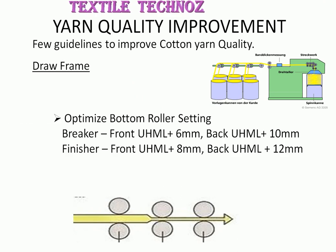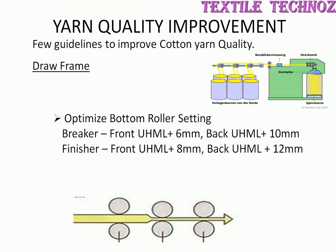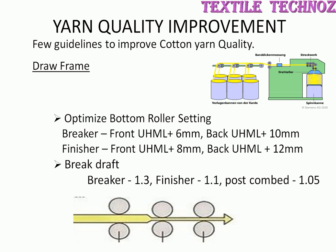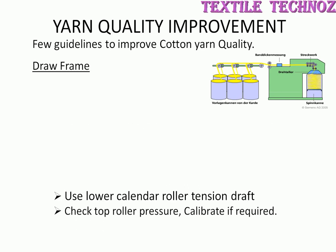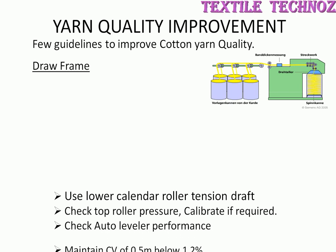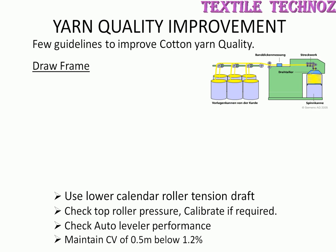In draw frame, optimize bottom roll setting as per recommendation. In breaker: upper half mean length plus 6mm front zone and UHML plus 10mm back zone. In finisher: UHML plus 8mm front zone and UHML plus 12mm back zone. Break draft should be 1.3 in breaker, 1.1 in finisher, and 1.05 in post comb. Use lower calendar roller tension draft. Check top roll pressure and calibrate if needed. Check auto-leveler performance and maintain half-meter CV below 1.2 percent.